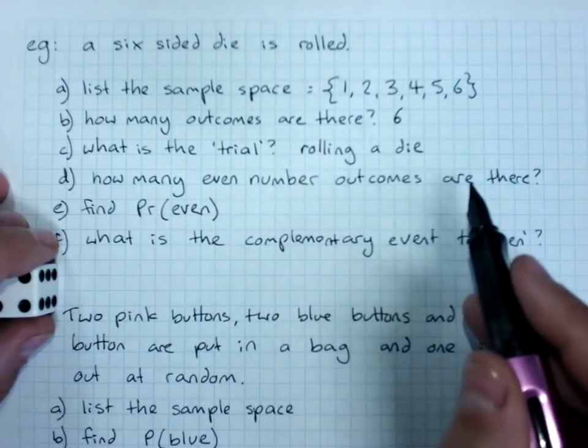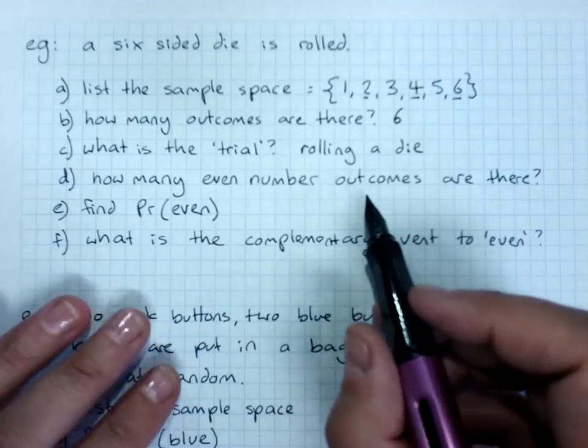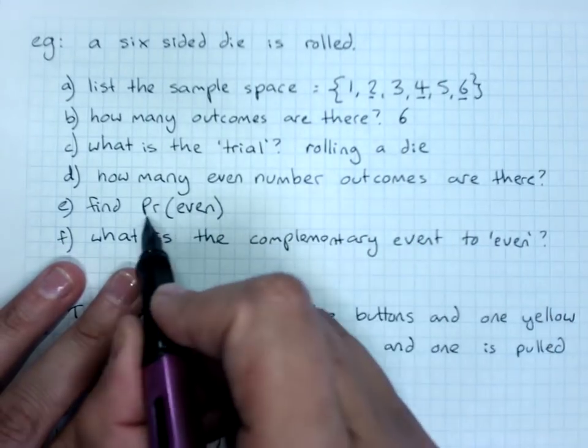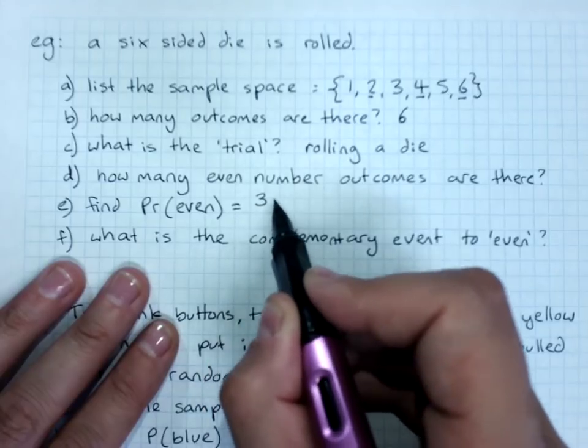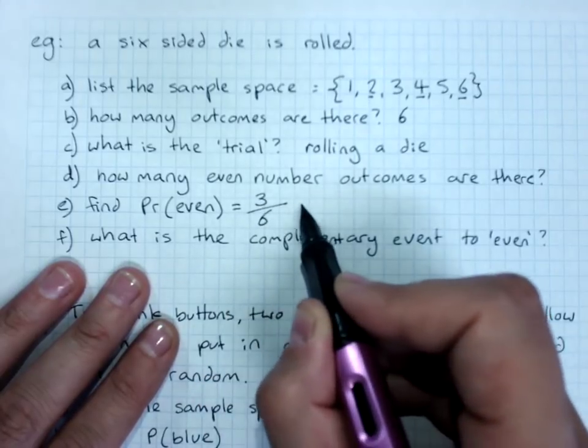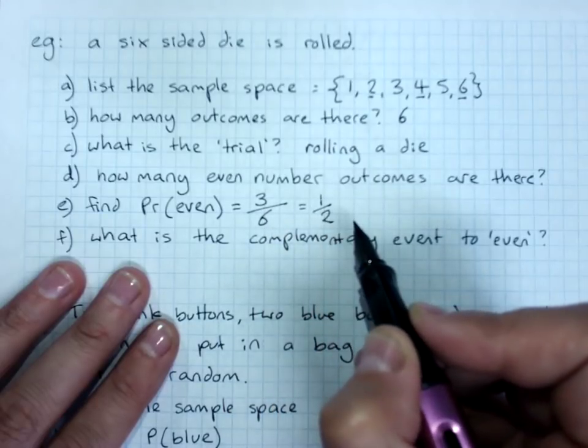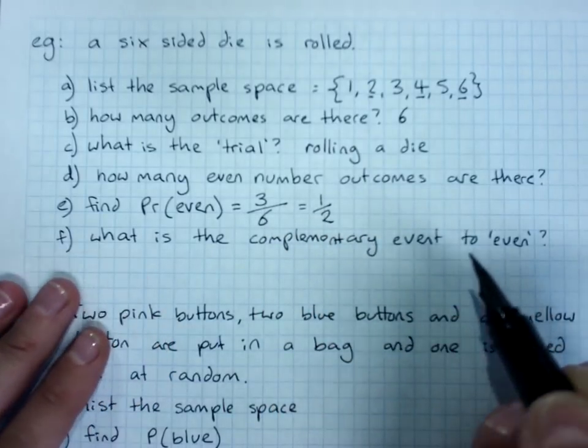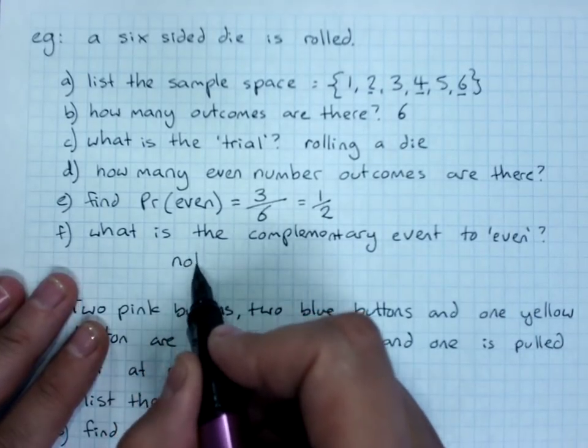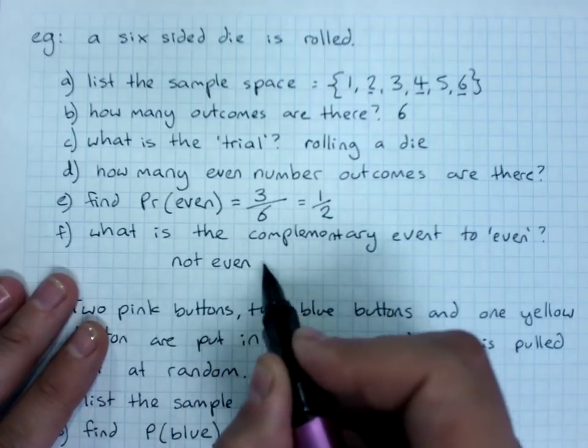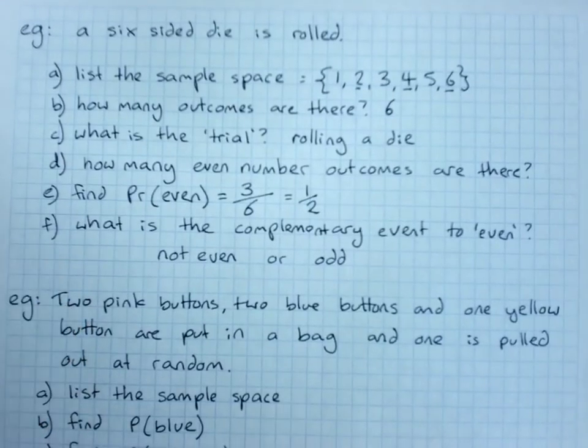How many even number outcomes are there? One, two, three. The probability of getting an even number would be three even outcomes out of six total possible outcomes, and that simplifies to one over two. What is the complementary event to even? Not even, or you could say odd.